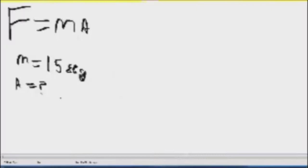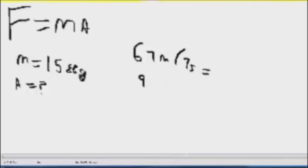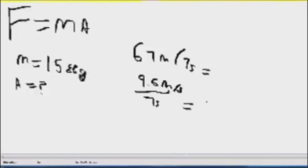To find the acceleration, we need to start by getting the velocity. We know that we traveled 67 meters in 7 seconds, which gives us a velocity of 9.6 meters per second. Now that we have the velocity, we can find the acceleration by dividing by the time again, which is 7 seconds, giving us 1.4 meters per second squared as the acceleration.